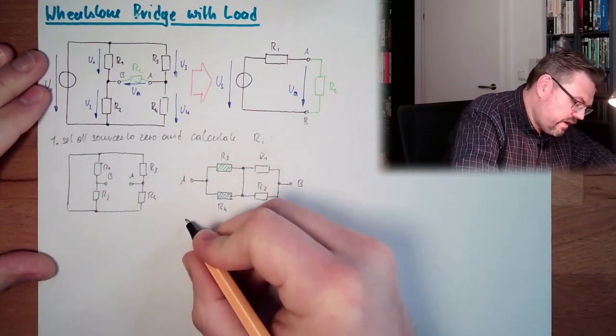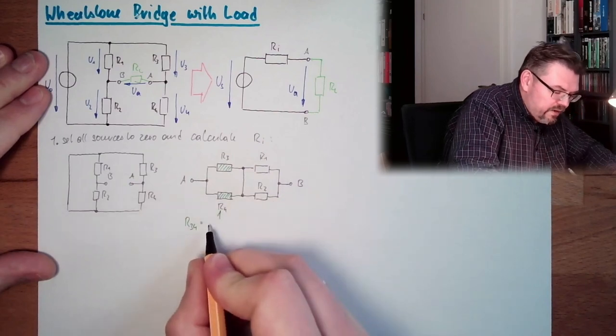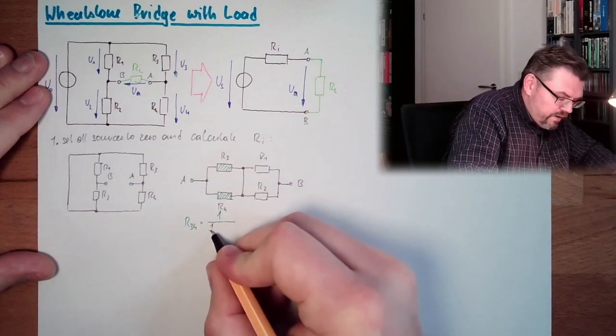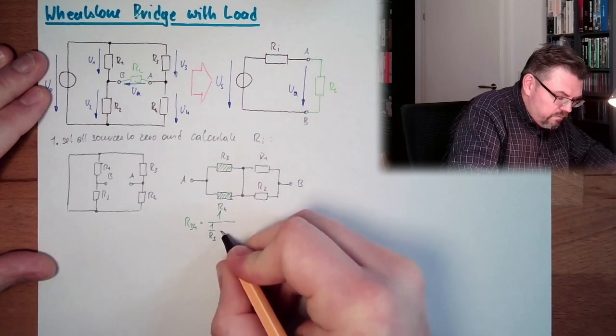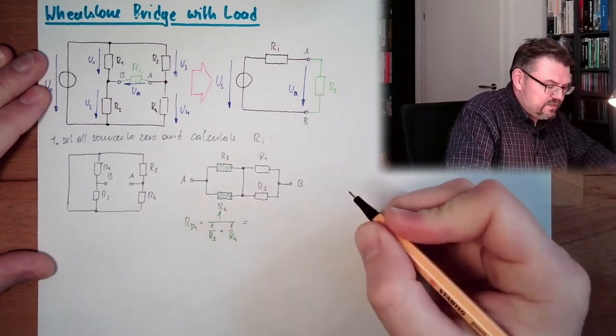So we have an R34 which is one divided by one divided by R3 plus one divided by R4, and this is equal...